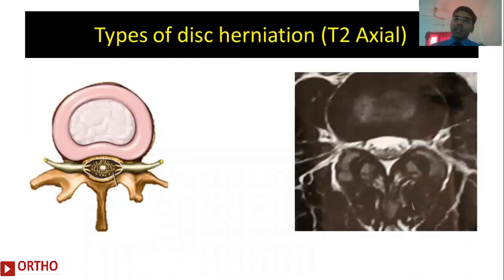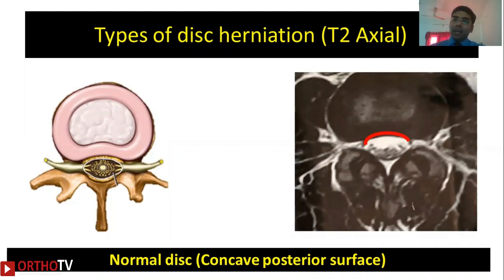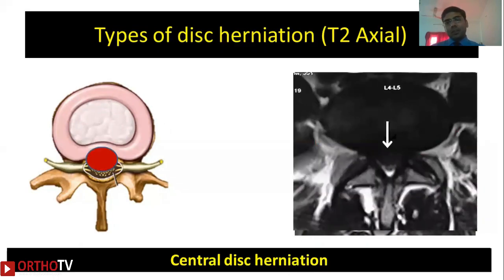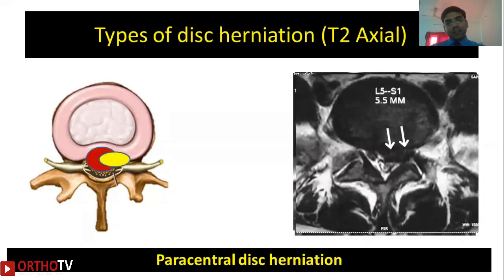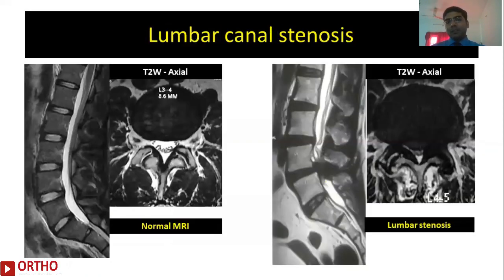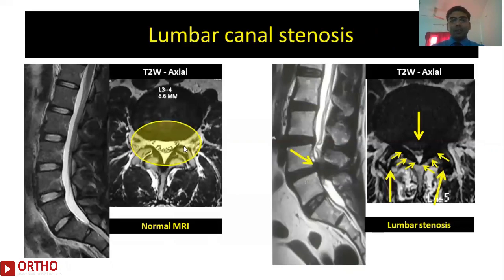On the T2-weighted axial image, the posterior surface of the disc is usually concave, and when it loses its concavity and becomes convex it is reported as a disc bulge, which may or may not be of clinical significance. Clinically significant findings include a central disc herniation, paracentral herniation, foraminal herniation, or extra-foraminal herniation. Apart from disc pathologies, stenosis from degenerative changes giving rise to claudication can also be identified on MRI. On the left you can see the dural sac and nerve roots lying freely, whereas on the right, because of the herniated disc and ligamentum flavum hypertrophy, there is significant compression and clumping of the nerve roots.